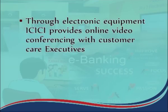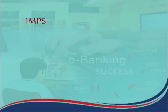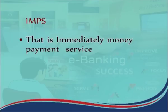Through electronic equipment, ICICI Bank provides online video conferencing with customer care executives. Most banks have online banking websites as well as mobile apps — for example, ICICI Bank iMobile and State Bank of India State Bank Freedom. These apps can be downloaded on smartphones and handle basic transactions such as checking balance, transferring money, and booking movie tickets. Along with RTGS and NEFT, banks have introduced IMPS — Immediate Mobile Payment Service — through which consumers can transfer money via mobile app.